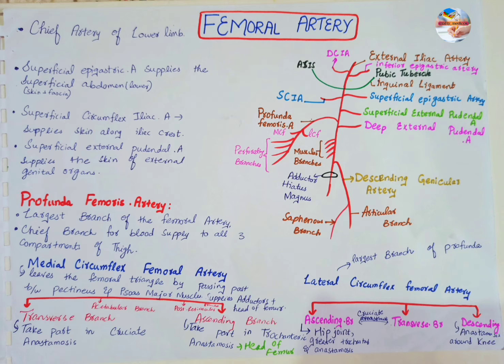The first perforating artery arises just above the upper border of the pectineus and the second at the lower border of the pectineus. The second perforating artery also gives a nutrient artery to the femur. The third perforating artery arises on the adductor longus and the fourth is the termination of the profunda femoris artery.